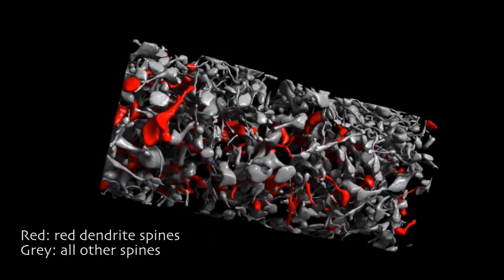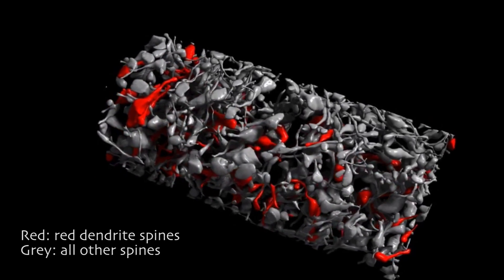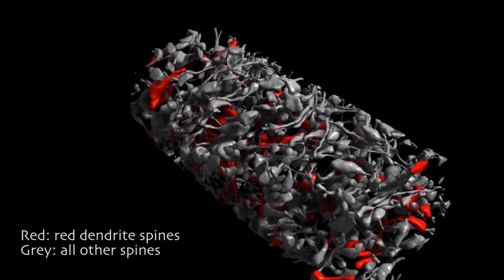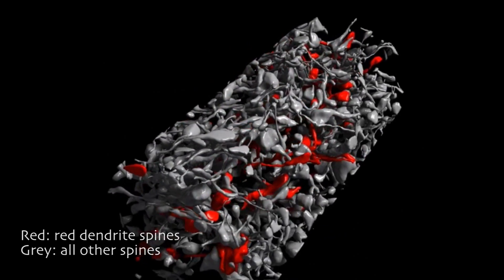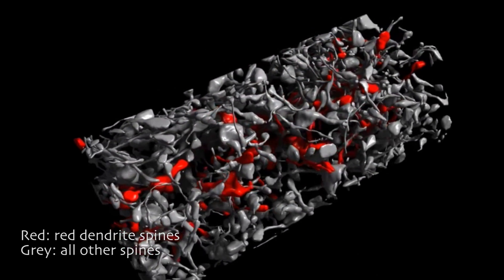An axon that runs through our fully reconstructed volume meets many spines and chooses a small subset of them to make synapses. Which spines are chosen appears to depend on the identity of the axon and the dendrite.